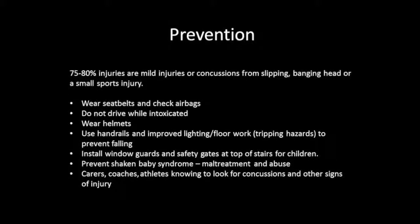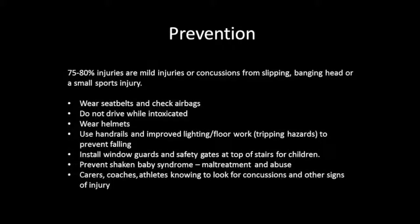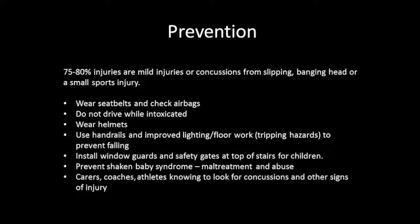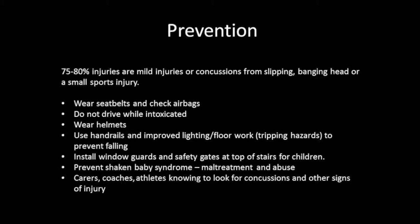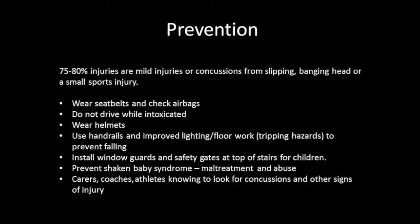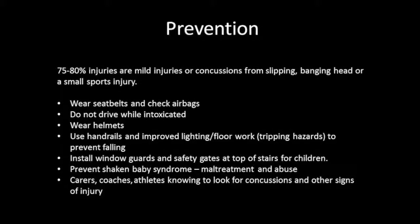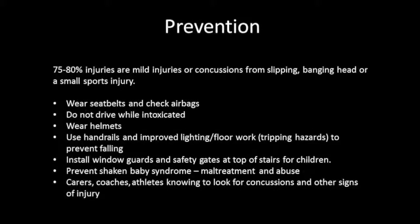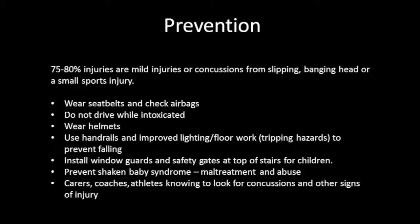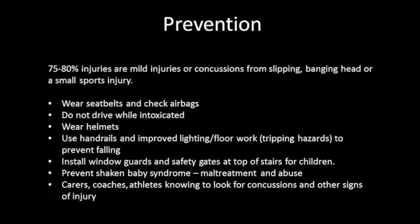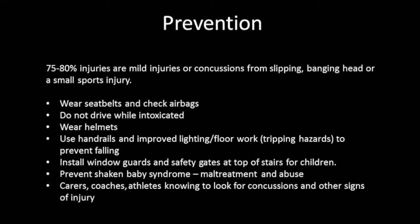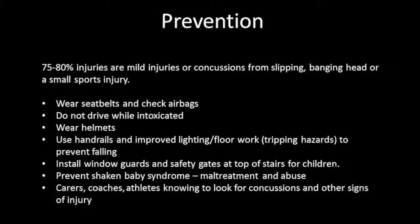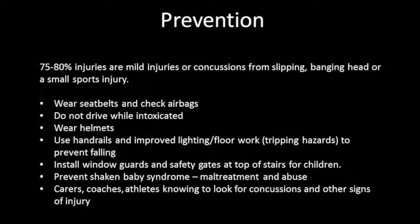To avoid the complications of TBI, preventions are of great importance. 75-80% of injuries are mild injuries or concussions from slipping, banging the head, or small sports injuries. In order to prevent these: wear seatbelts and check for properly functioning airbags; do not drive while intoxicated; wear helmets; use handrails and avoid tripping hazards to prevent falling; install window guards and safety gates at the top of stairs for children; prevent shaken baby syndrome by avoiding maltreatment and abuse. Finally, carers, coaches, and athletes should know how to look out for concussions and other signs of injuries.